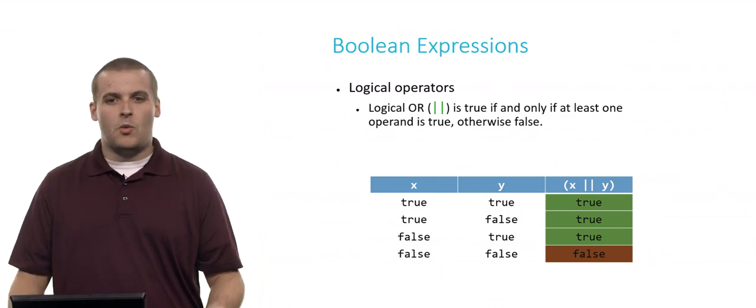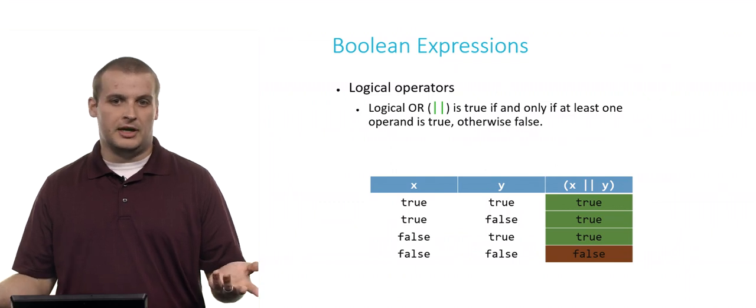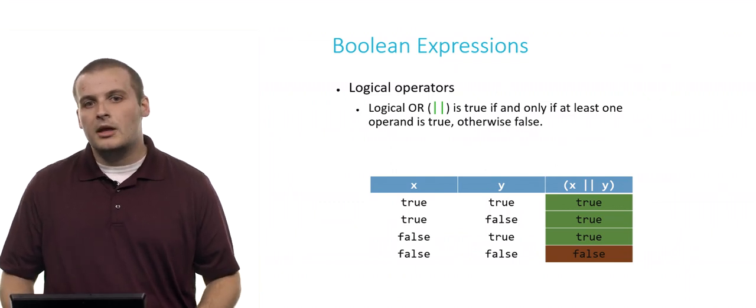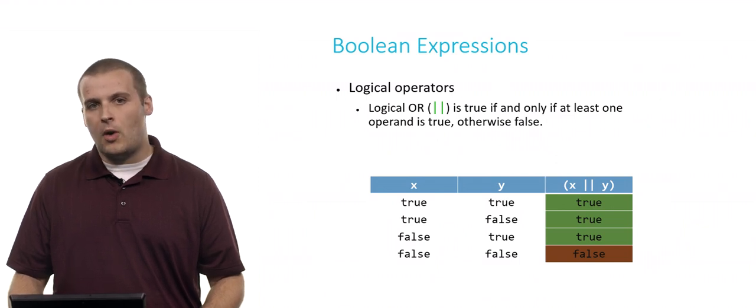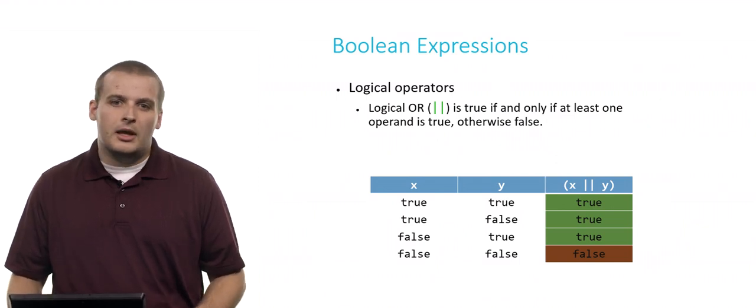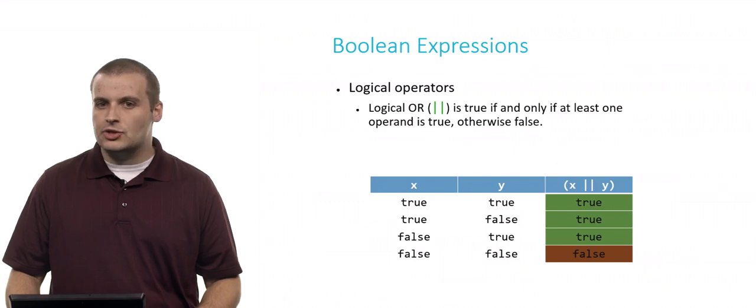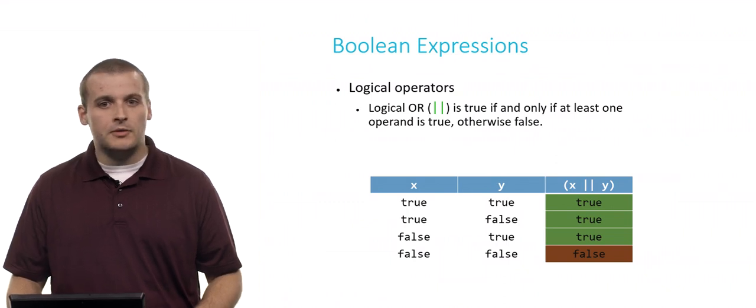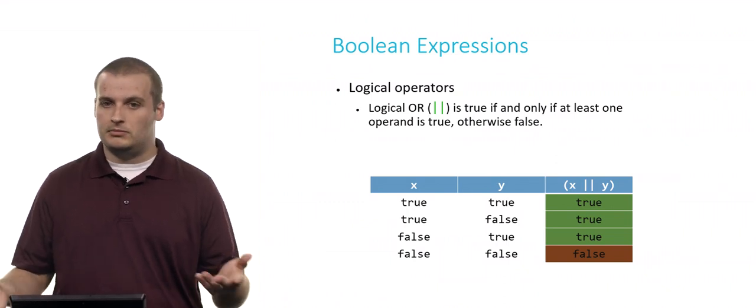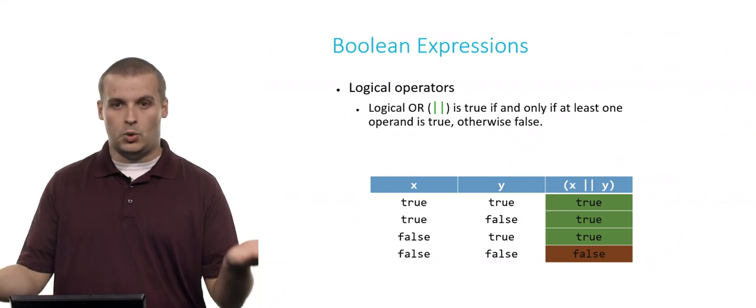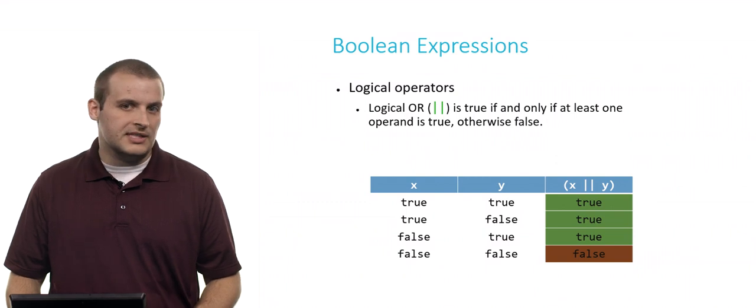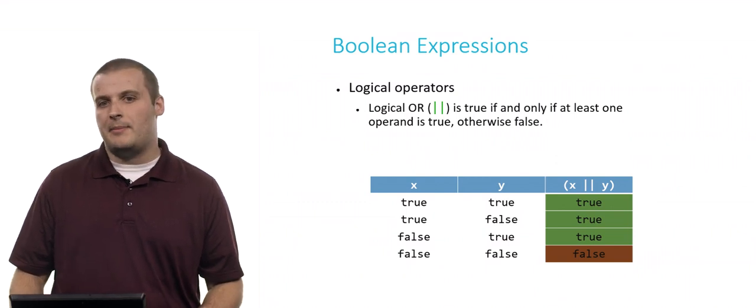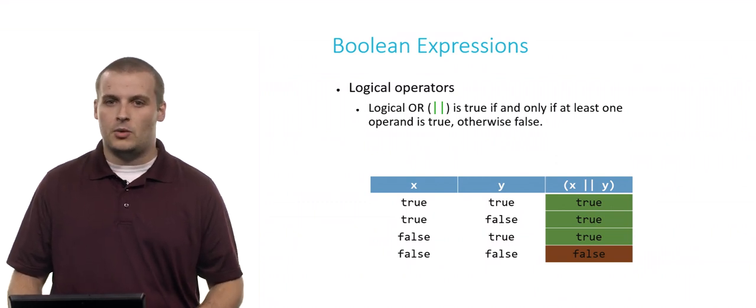So if x is true and y is true, we'll go down that path. X is true, one of them is true, right, if x is true and y is true. If x is true and y is false, one of them is still true. So x or y is still true. If x is false and y is true, well, one of them is still true, right? Y is true in this case. So it's true that x or y is true. Only if x is false and y is false do we not go down that path because neither x nor y is true.